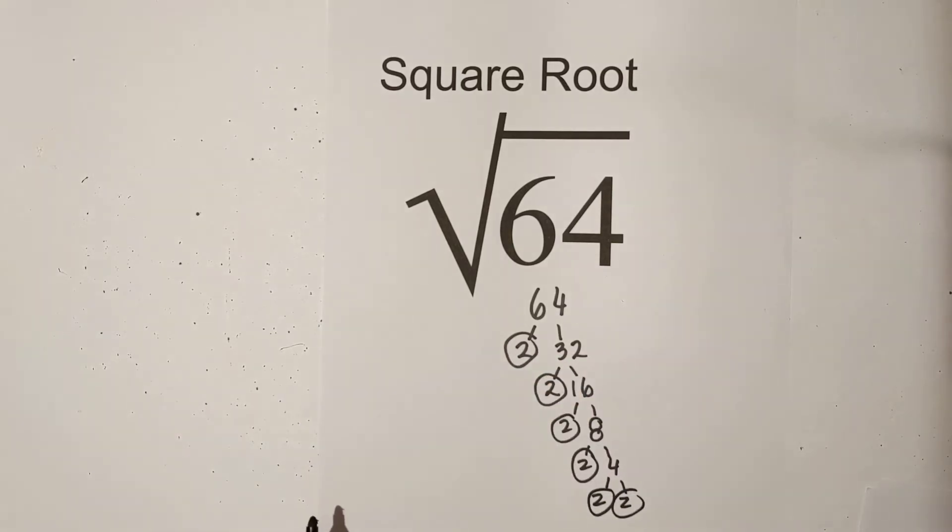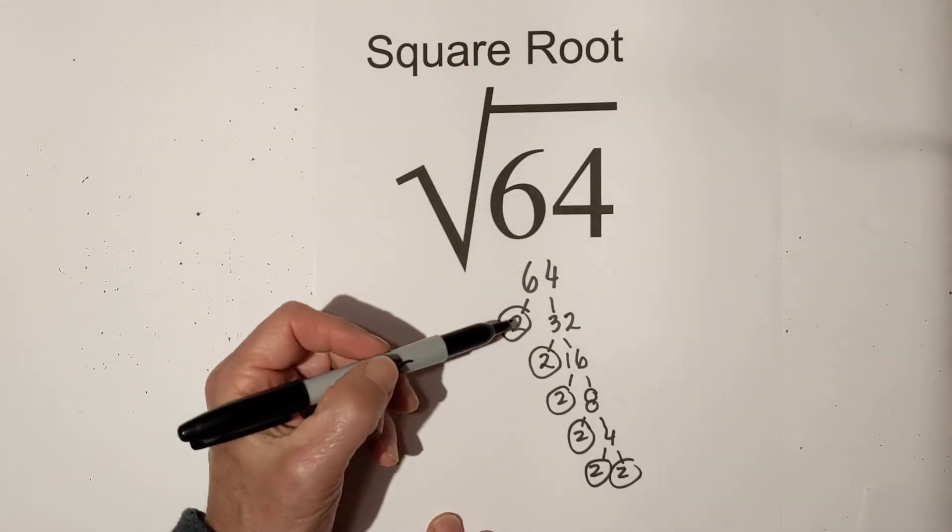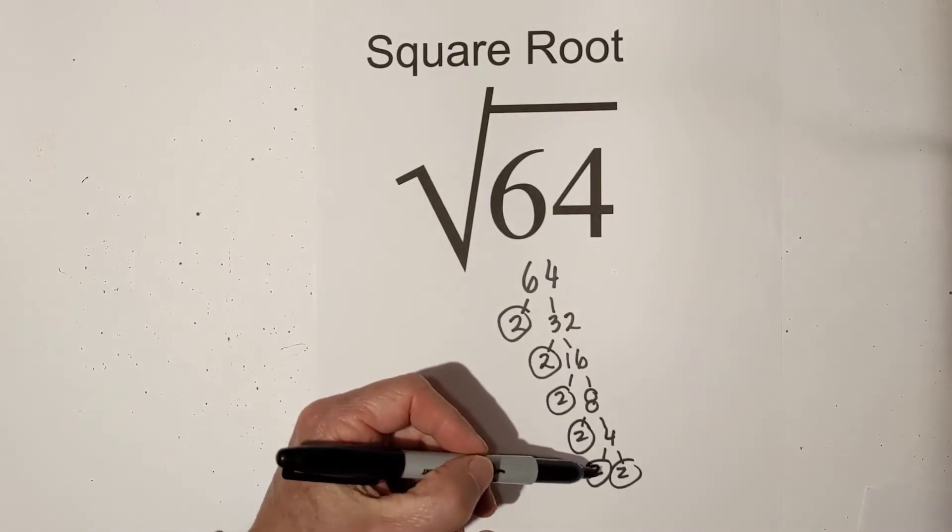Let's be very careful. I almost went off the page there, didn't I? Let's be very careful and count the number of 2's. 1, 2, 3, 4, 5, 6.